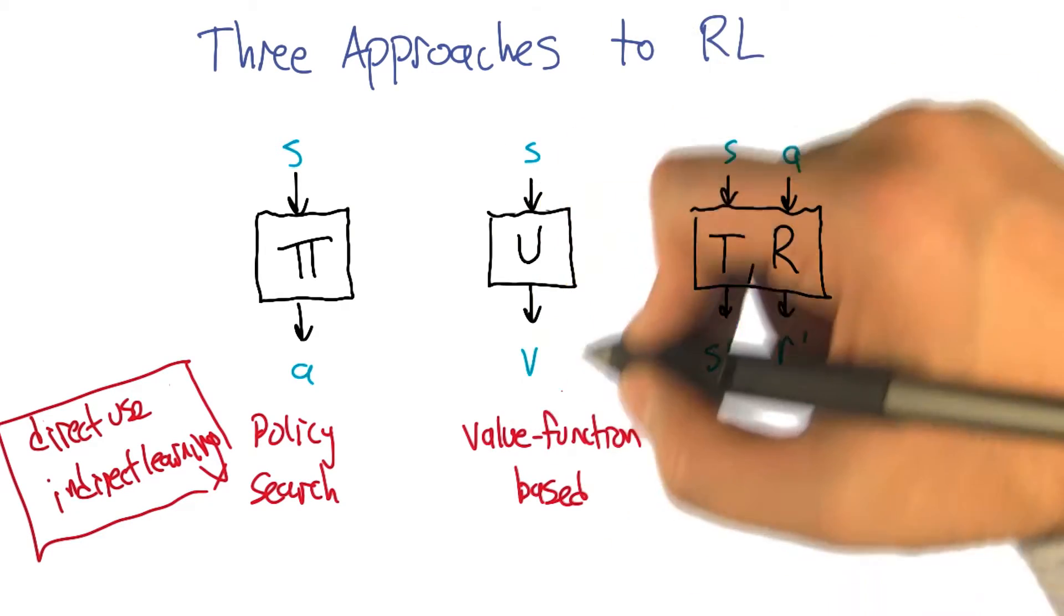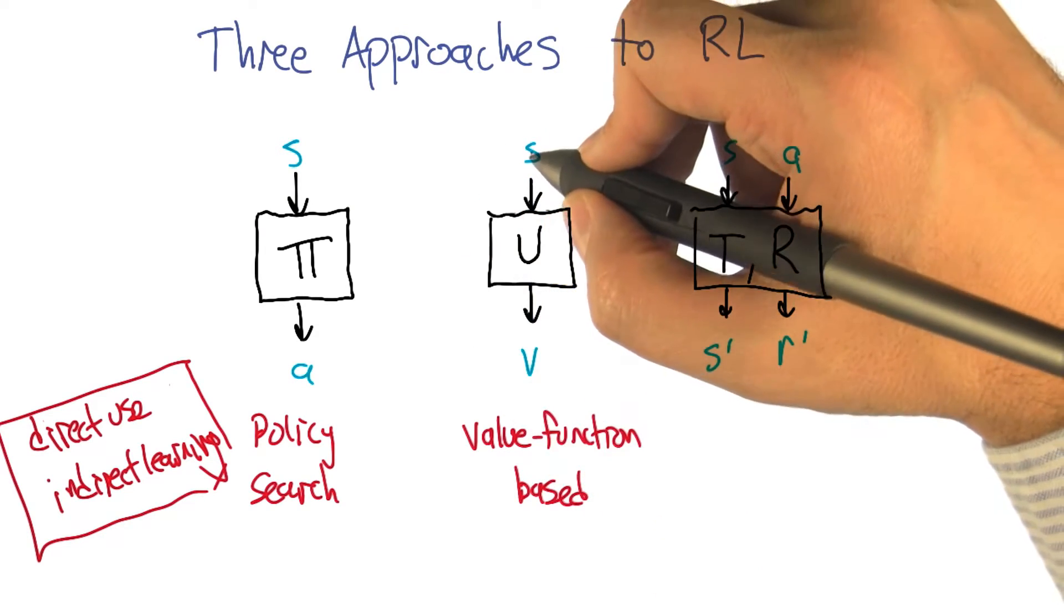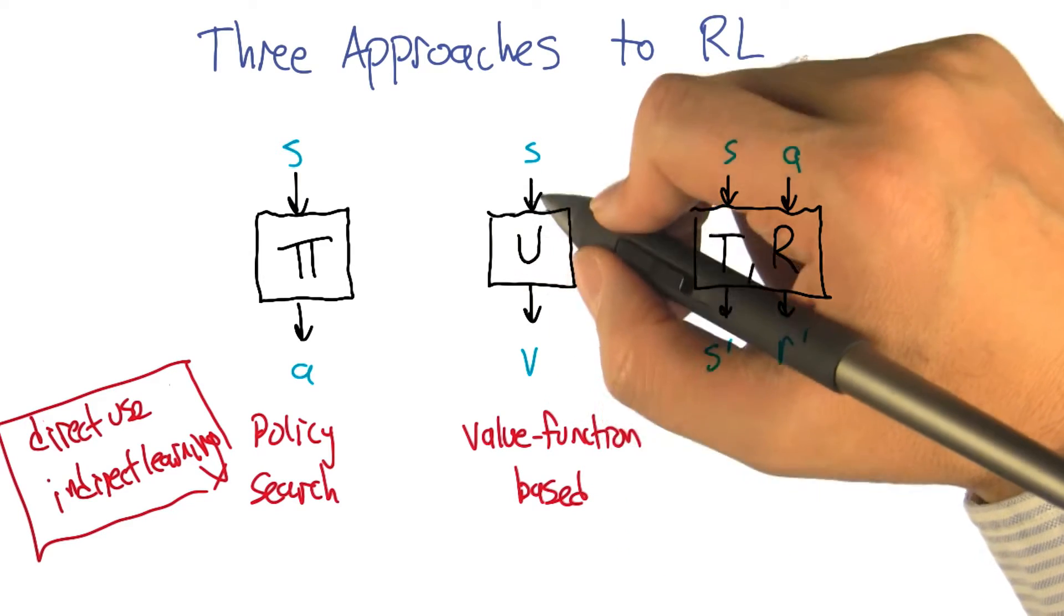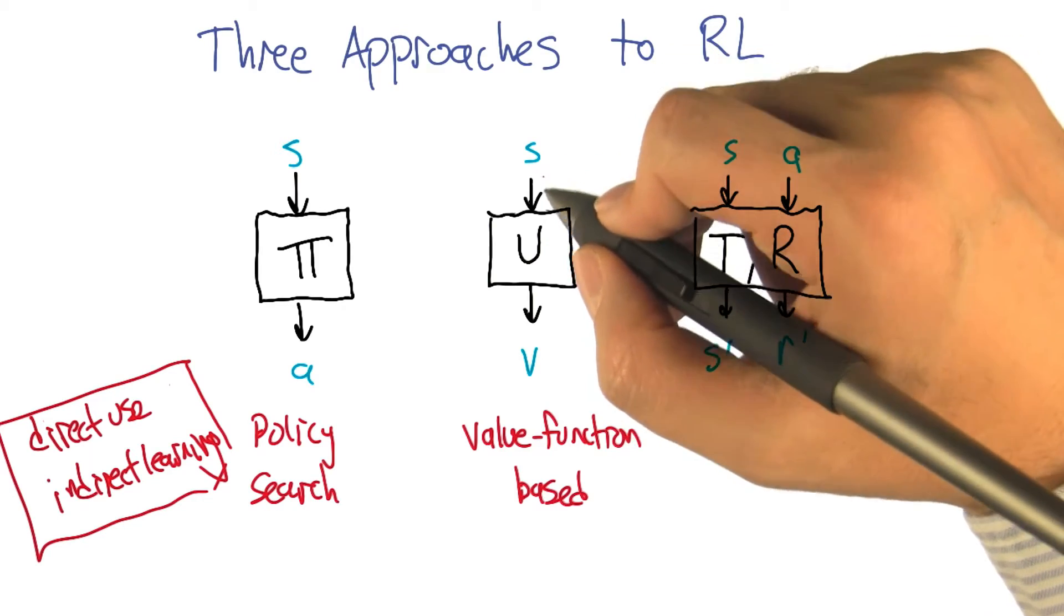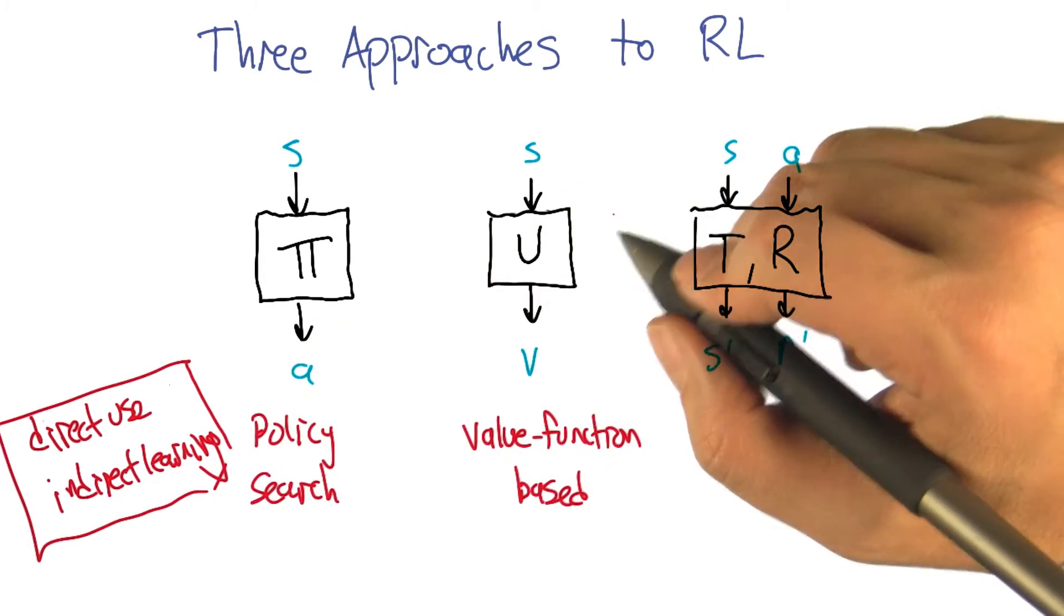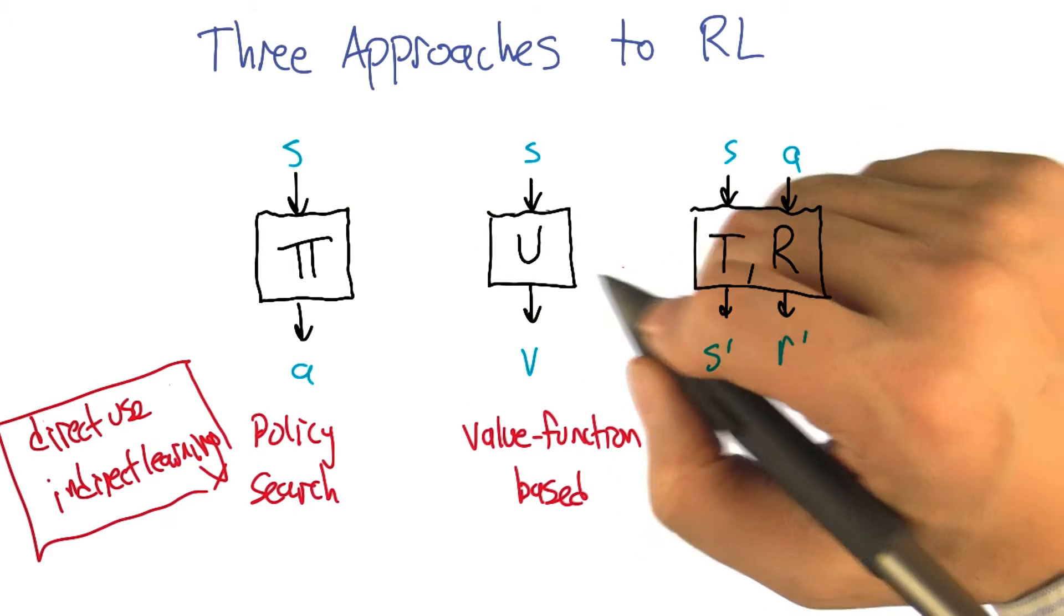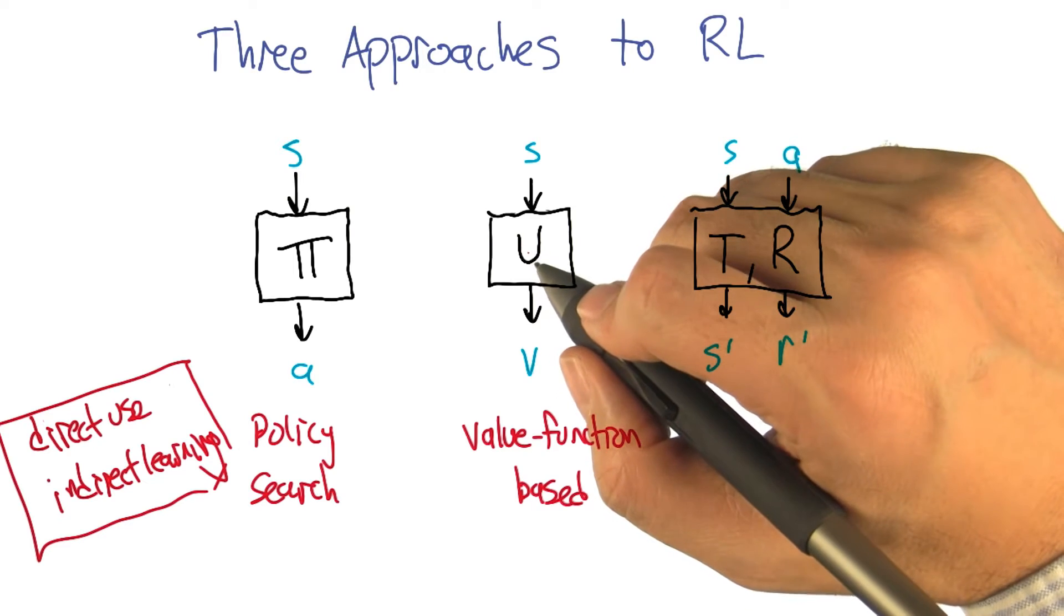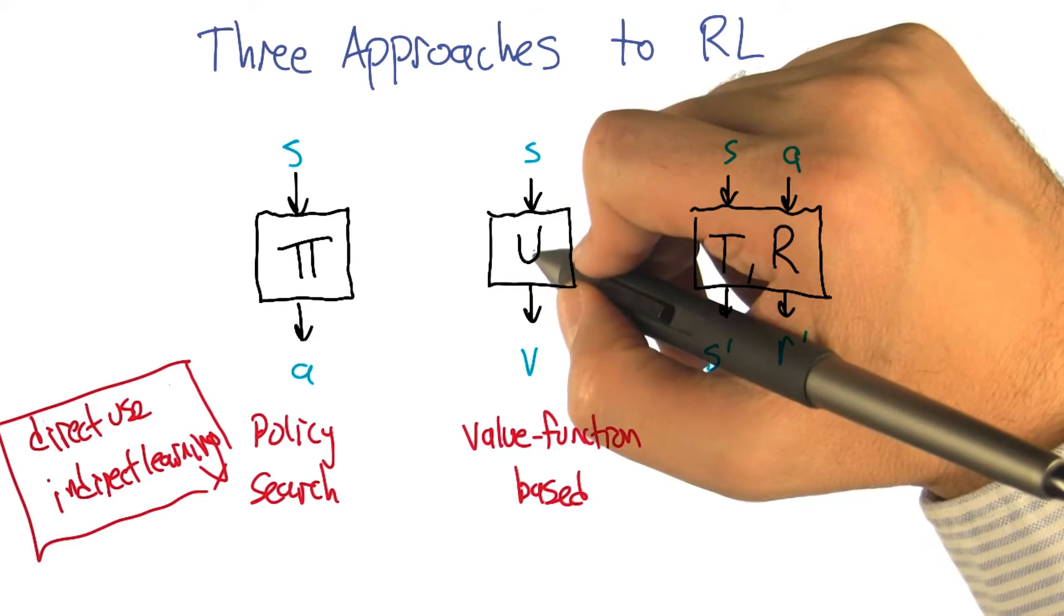And let's say that we try to learn this. We're trying to learn to map states to values. Well, the good news is, at least if we're acting in the world, we're getting to see 'okay, I was in some state, I took some action,' and I can observe the values that actually result from that and maybe use that to make updates. So you can kind of imagine learning this. So the learning's not quite as indirect.